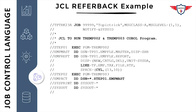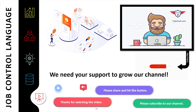Here is a sample JCL executing two separate programs in different steps. Step one executes a program called TREMP002, and step two executes a program called TREMP003. In step two, I want to use a file that was used in the previous step. To do this, on step two under the EMPACCOUNT DD name, I specified DSN followed by an equal sign, then asterisk.STEP01.EMPMAST. This informs the system to use the same file that was used in step one under DD name EMPMAST.